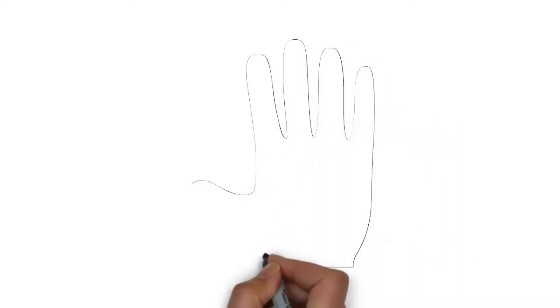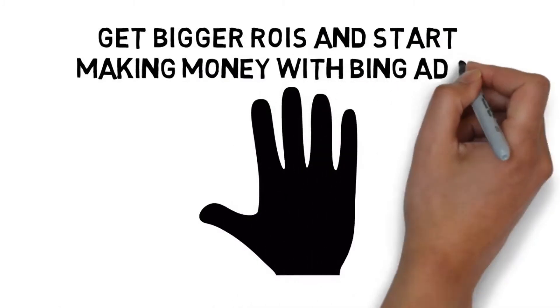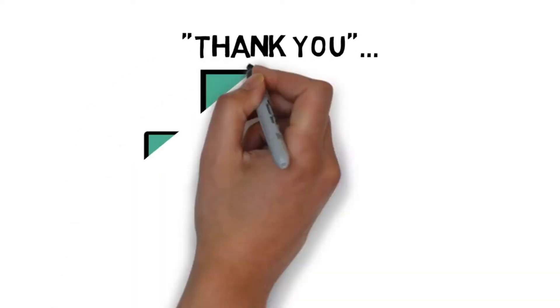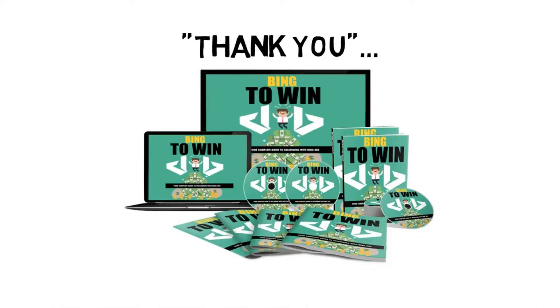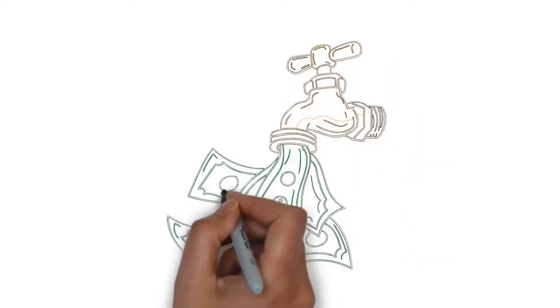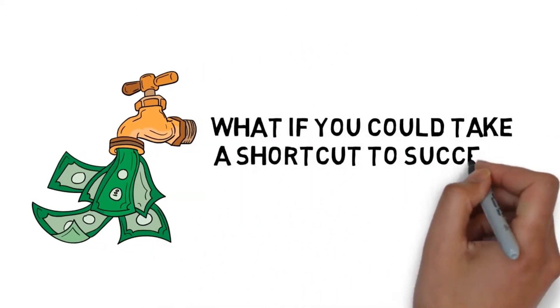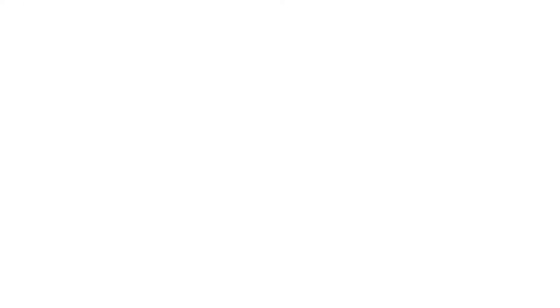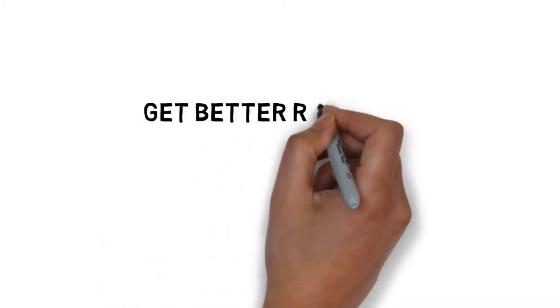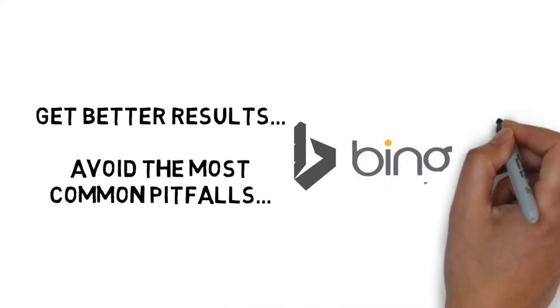Wait! Before you get started, how would you like to get bigger ROIs and start making money with Bing Ads even faster? First off, I want to personally thank you for purchasing the step-by-step guide to Bing Ads. You'll have profitable campaigns running in no time with what you'll discover inside the guide. But what if you could take a shortcut to success with PPC using Bing Ads? What if you could begin getting positive ROIs faster? And what if you could also get better results and make sure that you avoid the most common pitfalls people run into with Bing Ads?